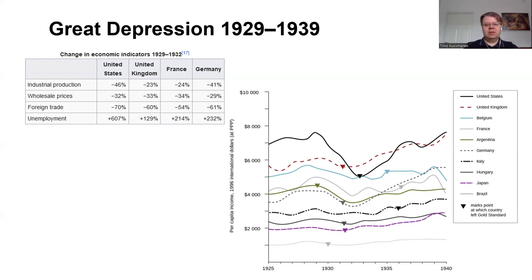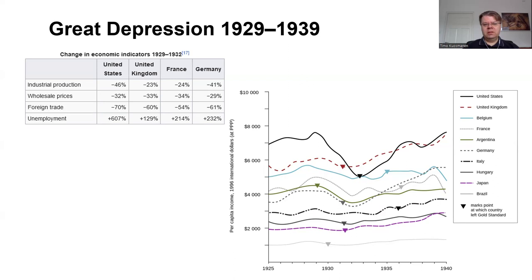This picture illustrates the development of per capita income over the years, and there is a table showing changes in economic indicators in four countries: the United States, the United Kingdom, France, and Germany. You can see that industrial production, wholesale prices, and foreign trade fell dramatically, and there was a huge surge in unemployment in all four countries.